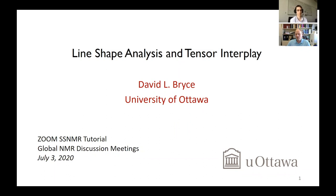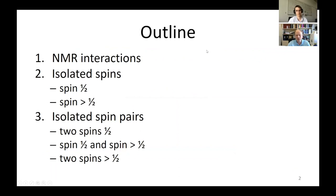Today I want to talk about some of the fundamentals of what we do in our lab — being able to understand how to properly analyze basic NMR line shapes and the role that tensors and all these interactions have on the line shapes. It's quite a basic outline; it's difficult to decide at what level to present this tutorial. We'll stop after about 15 minutes for questions and then I have a second section.